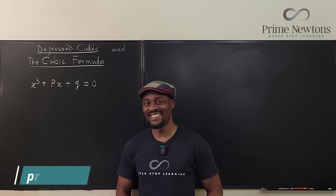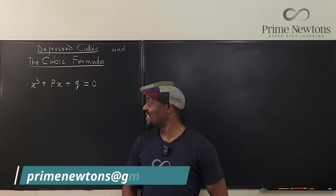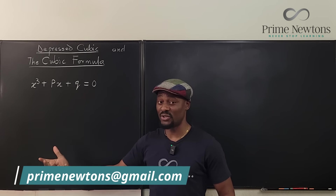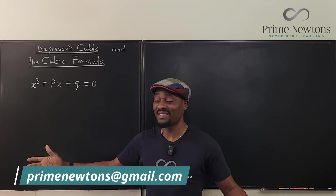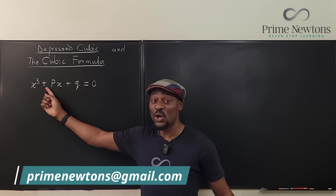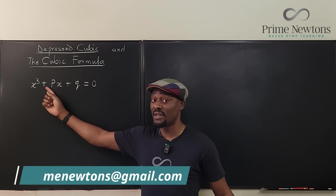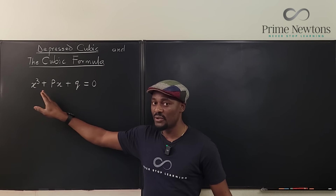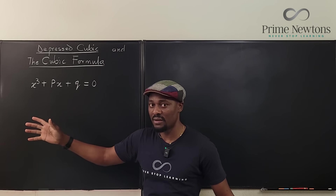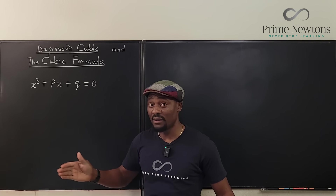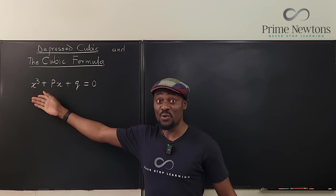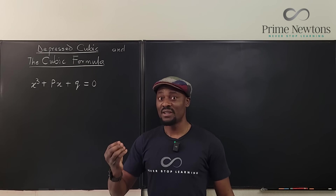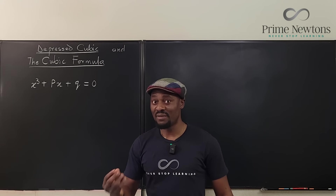Welcome to another video. This is a depressed cubic equation. Why is it depressed? Because there is no quadratic term in this equation. We went from x cubed to just x — there is no x squared. If you can get your cubic equation to look like this, then you can use the cubic formula.